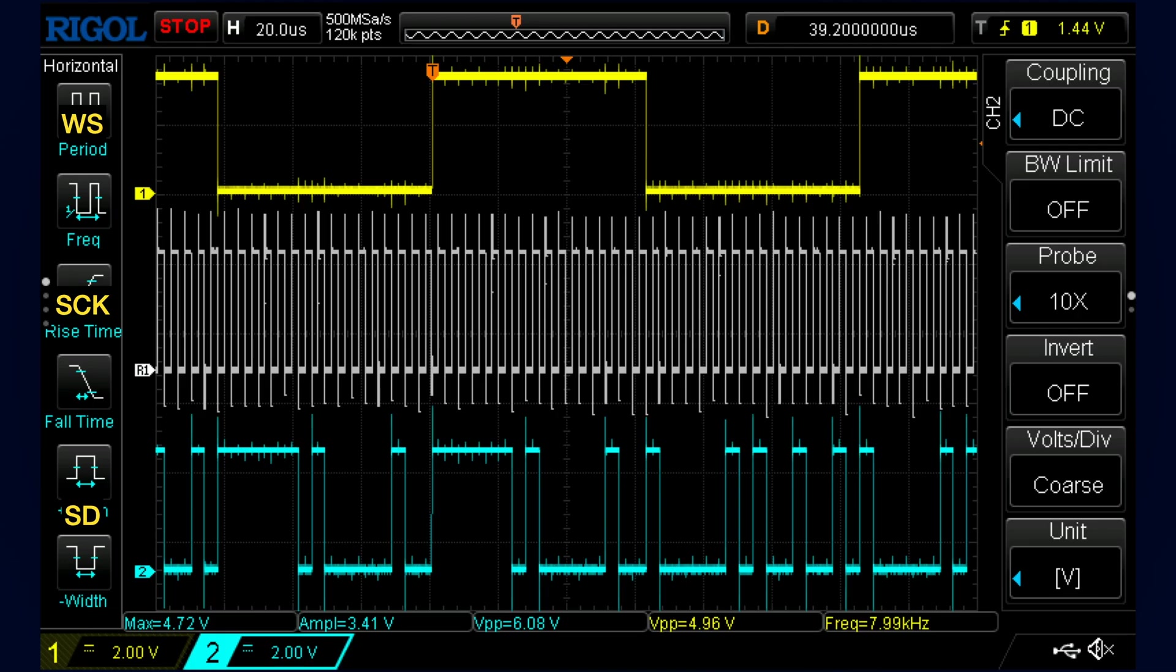Once again I have captured these three lines from the ESP32 on my oscilloscope. Here we can see the left right clock line going high and low for each channel. Here's the serial clock. I'm sending 16-bit data so we see 16 clock cycles for each left right clock phase. And here's the serial signal carrying the audio data encoded as 16-bit words.